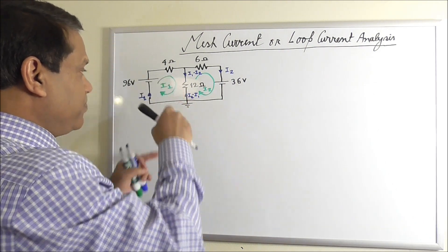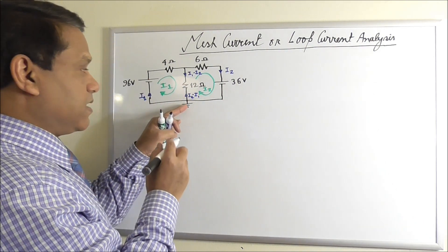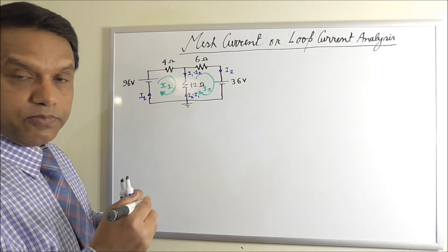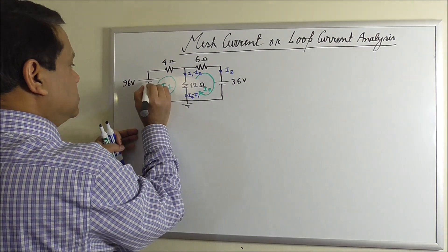Let's write down the KVL equations. Let us first write the equation for this loop. Starting from the ground node and going clockwise. This is the voltage rise. Before we write the equation, we have to mark the polarities. This is minus, plus.